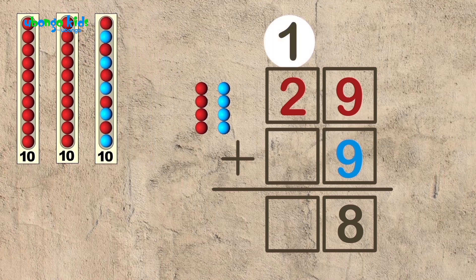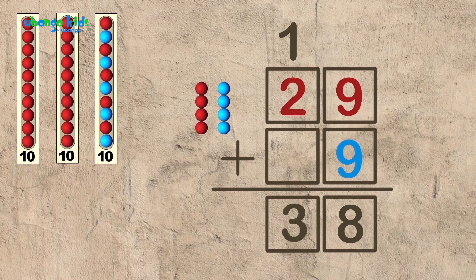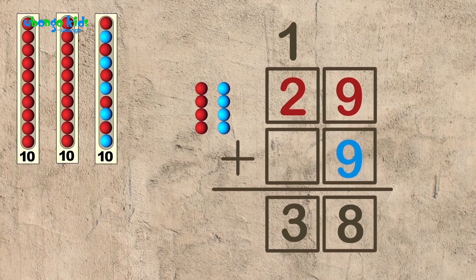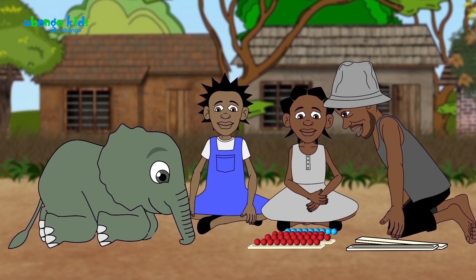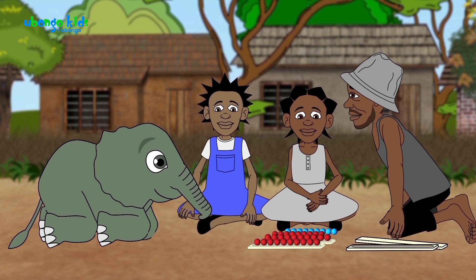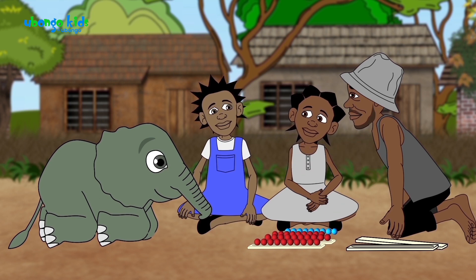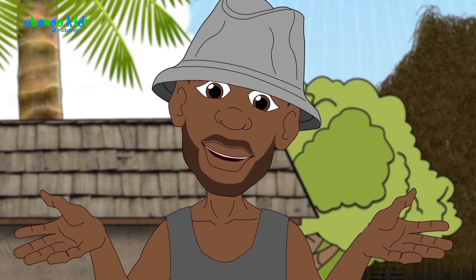You see? What's one plus two? Three! So, twenty-nine plus nine equals thirty-eight. You see how much easier this is than to count each individual bead one by one? This is called grouping and carrying. You see?